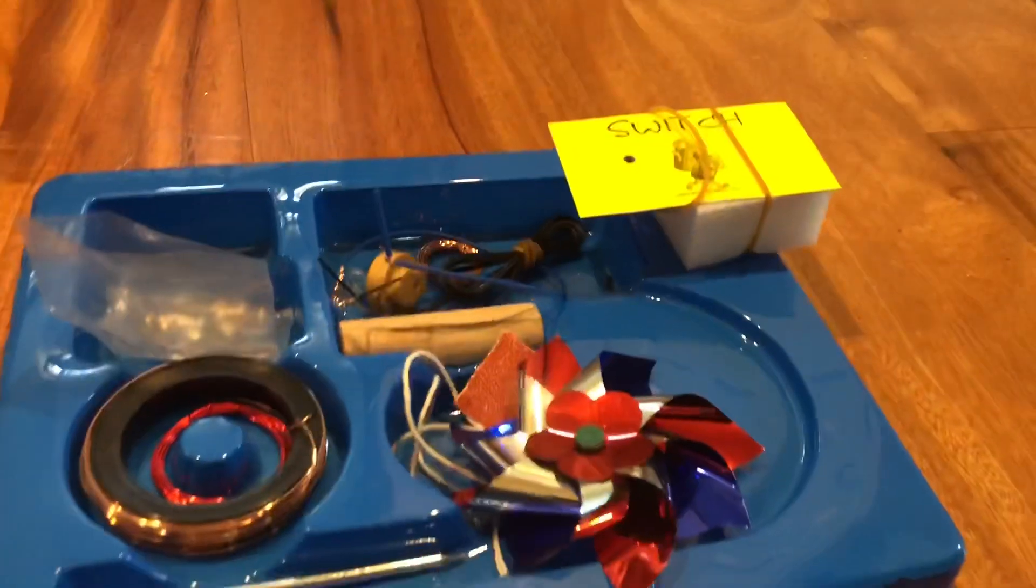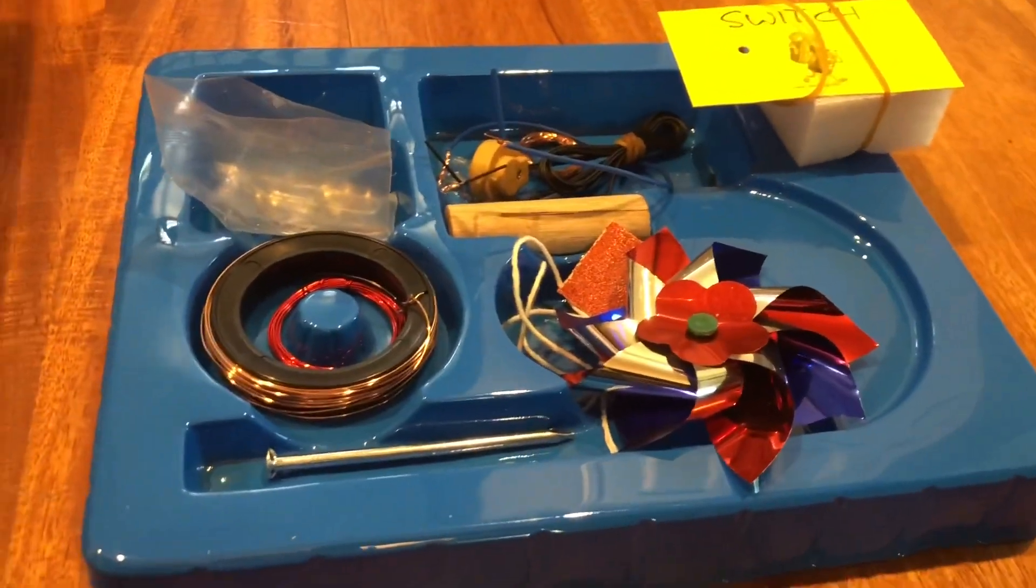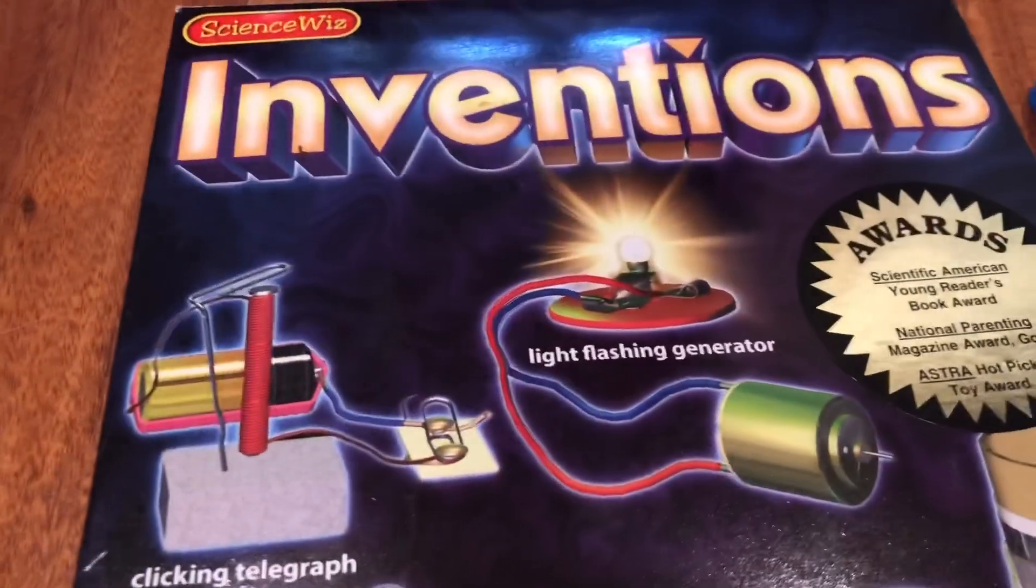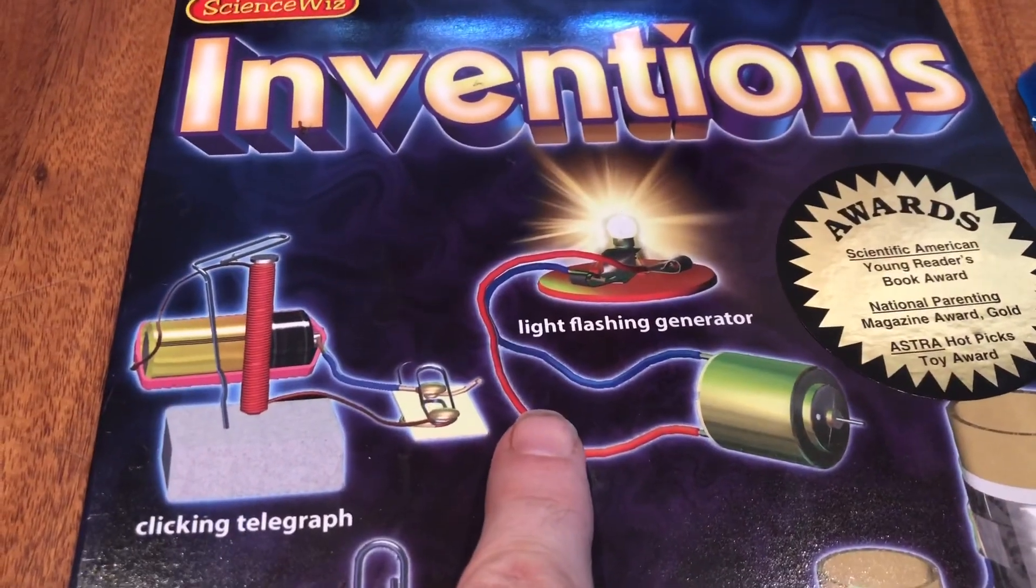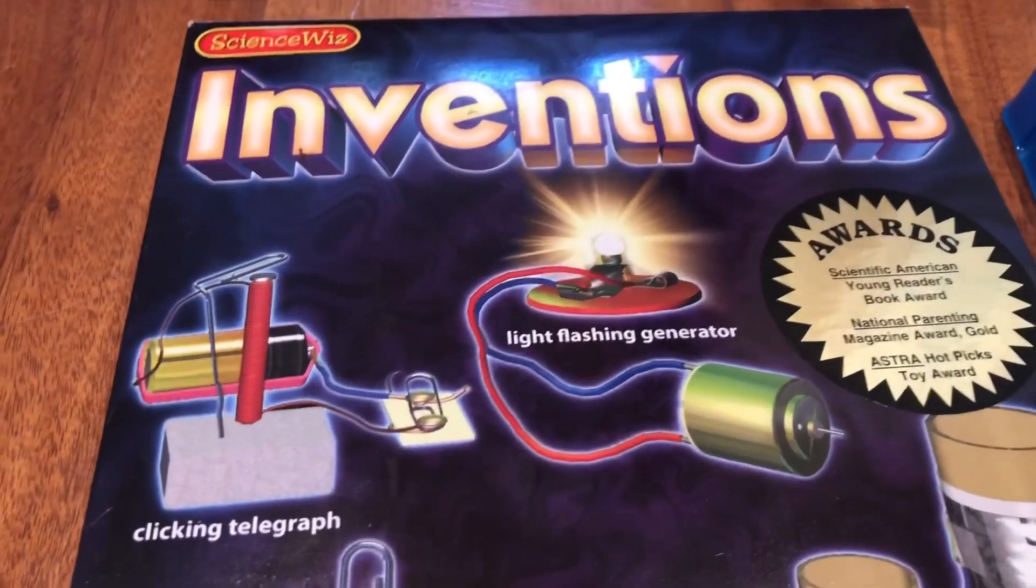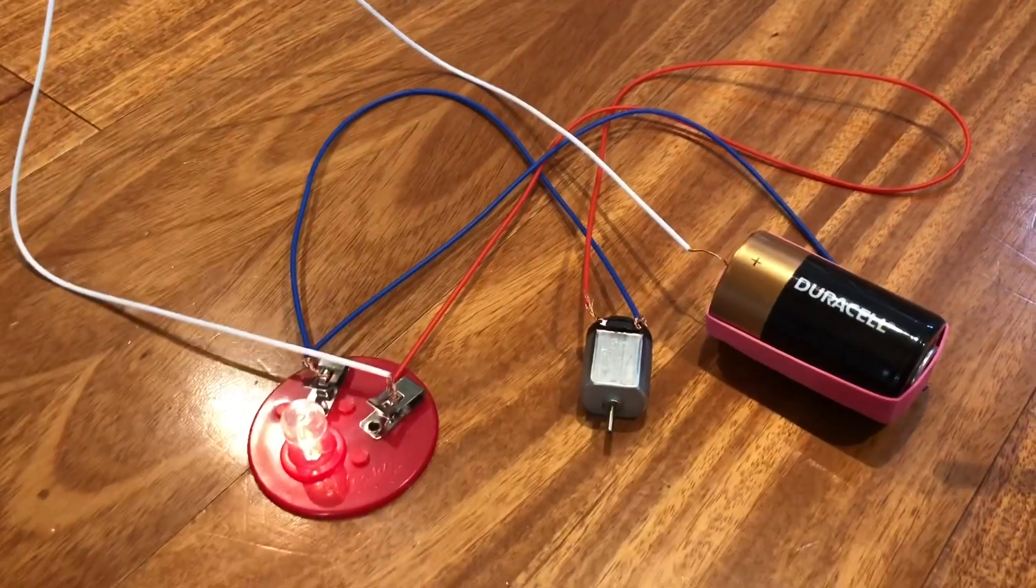Here are some different things that come in the kit and different things you can make. You can make the light flashing generator, which we played with a little bit. We ended up turning it back into a motor and hooking up that battery and that light. And here's a real working radio.